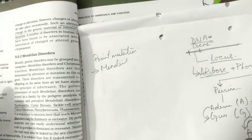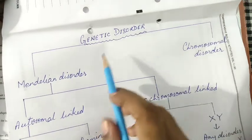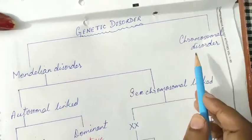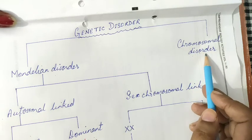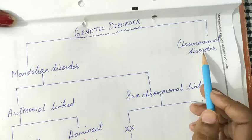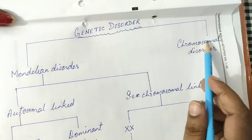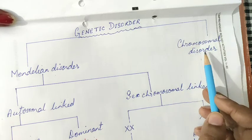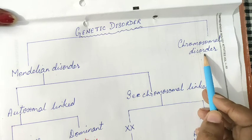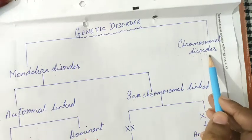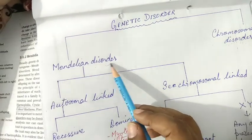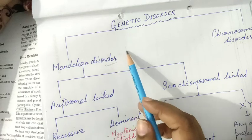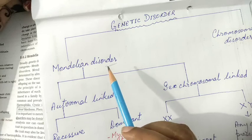Genetic disorder is of two types: Mendelian disorder and chromosomal disorder. In chromosomal disorder, the chromosome number changes — if normal is 46, it either decreases to 45 or increases to 47, like in Down syndrome (47), Turner syndrome (45), and Klinefelter syndrome (47). We have already studied these. For chromosomal disorders, we don't need pedigree analysis since it is a sudden mutation. We use pedigree analysis especially for Mendelian disorders to understand their genetic chart.